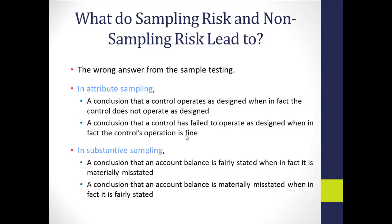In substantive testing, sampling risk and non-sampling risk leading to the wrong answer could mean concluding that an account balance is fairly stated when it's really materially misstated. If substantive testing showed everything was fine but we incorrectly analyzed the sample, we might declare accounts receivable as fairly stated — a big problem at the end of the audit. We can also incorrectly conclude a balance is misstated when it's fairly stated, causing very hard feelings with audit clients. We really don't want either error to occur.